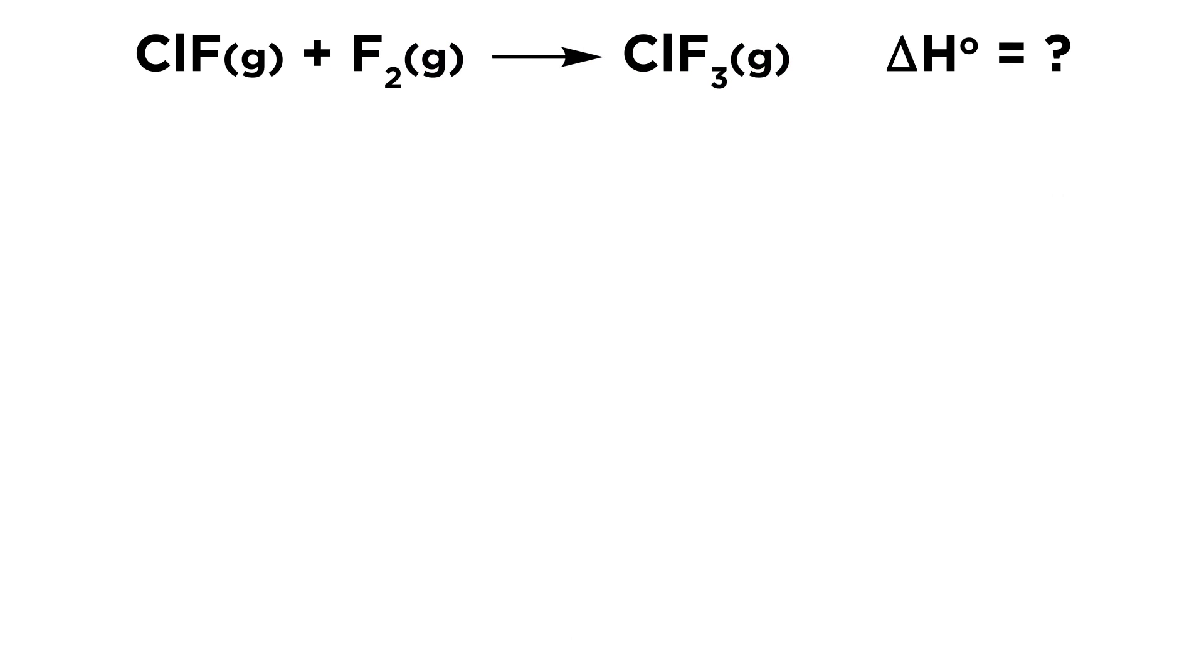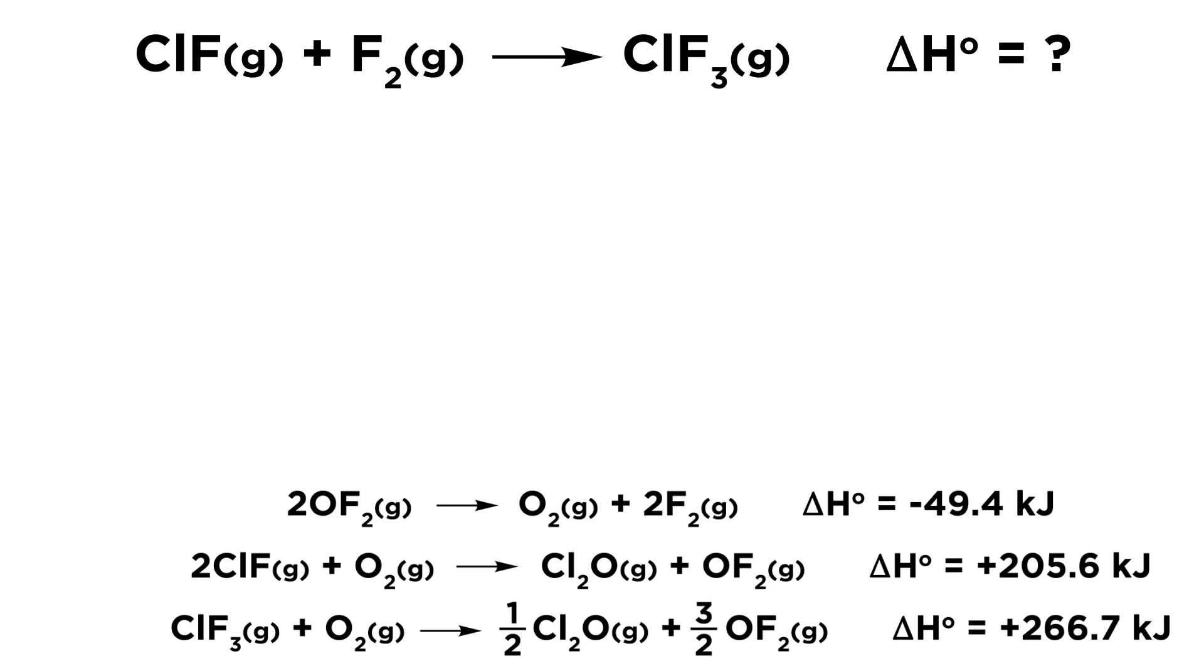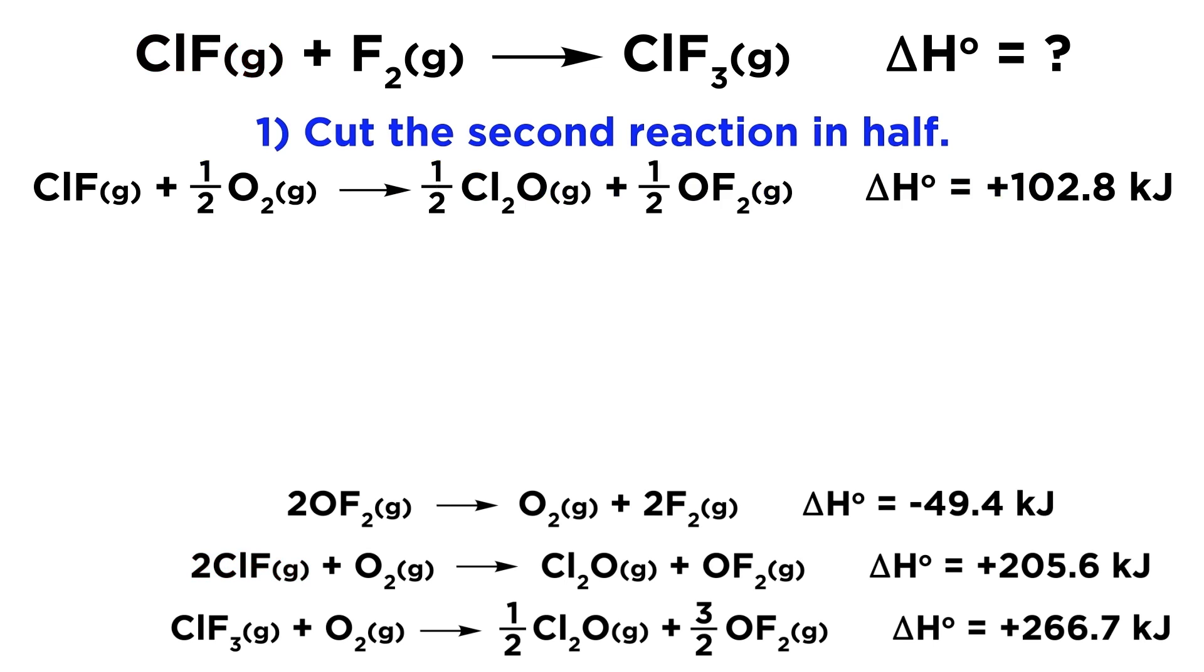Let's try just one more example that is a bit trickier. How can we find the change in enthalpy for the reaction in question given this data? First we need ClF. Where can we find this substance below? It looks like the second equation has this substance as a reactant, but it has a coefficient of two. So our first step will be to take this second equation and cut it in half. Don't be afraid of fractional coefficients for the other substances. Using one half is just fine. And don't forget to cut delta H in half as well, giving us 102.8 kilojoules.